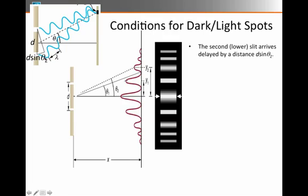then this side of the triangle is d times sine of theta, or sine of theta 2. That's the amount of extra distance that the lower wave has to make up to catch up with the upper wave.